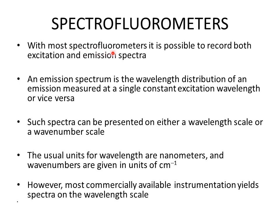With most spectrofluorometers, it is possible to record both excitation and emission spectra. The emission spectrum is the wavelength distribution of an emission measured at a single constant excitation wavelength, or vice versa for the absorption spectrum. These spectra can be presented on either a wavelength scale or a wavenumber scale. Wavelength is usually given in nanometers, while wavenumber is given in per centimeter. However, in most fluorescence spectra, the wavelength scale is used.